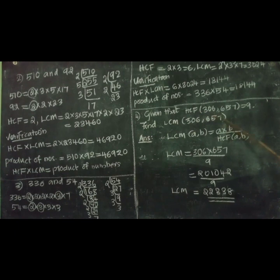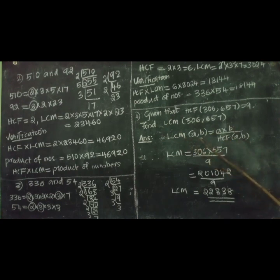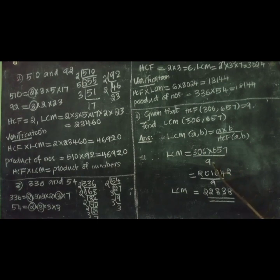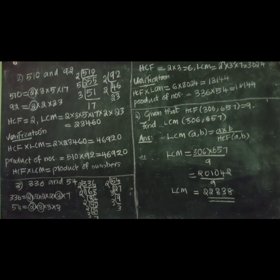Next question: given that HCF of 306 and 657 equals 9, find LCM of 306 and 657. Using the formula: LCM of (a, b) equals a times b divided by HCF of (a, b). LCM equals 306 times 657 divided by 9, which equals 22,338. In conclusion: HCF times LCM equals product of numbers; HCF equals product of numbers divided by LCM; and LCM equals product of numbers divided by HCF.